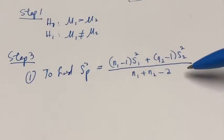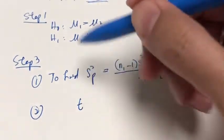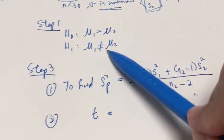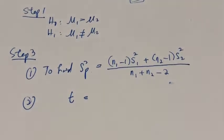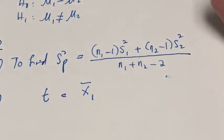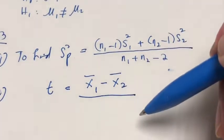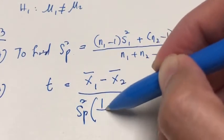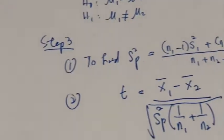Once we have the estimate of the pooled variance, we calculate the test statistic, which is t — remember, it's a pooled t-test, so we can't use Z. And because our objective is the same, the numerator is the same: the difference between the two sample means. Then in the denominator, we use the estimate of the pooled variance multiplied by (1/n₁ + 1/n₂), and we square-root it because it's a standard error.